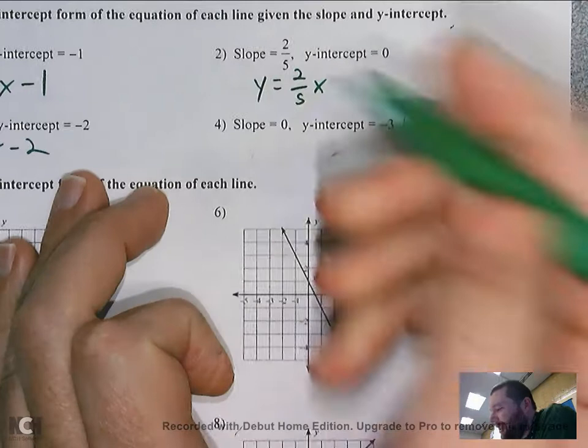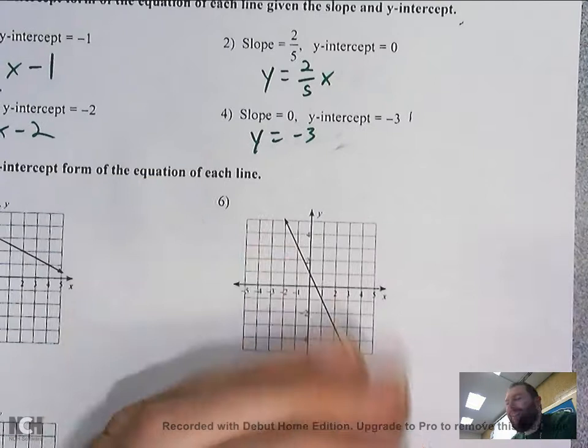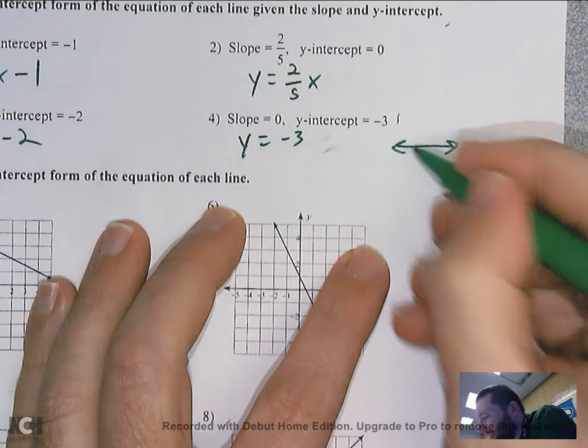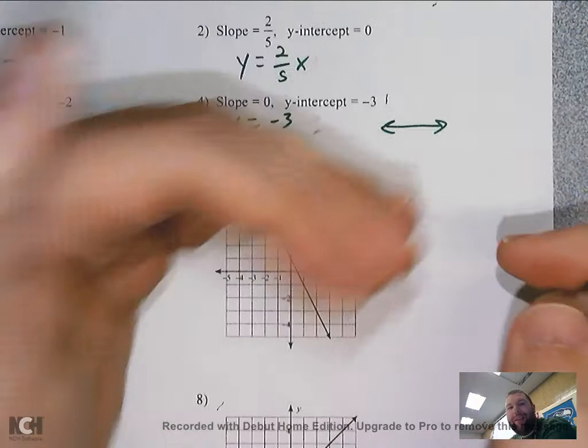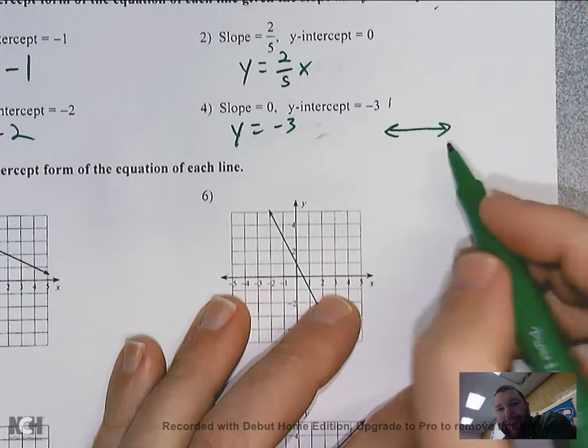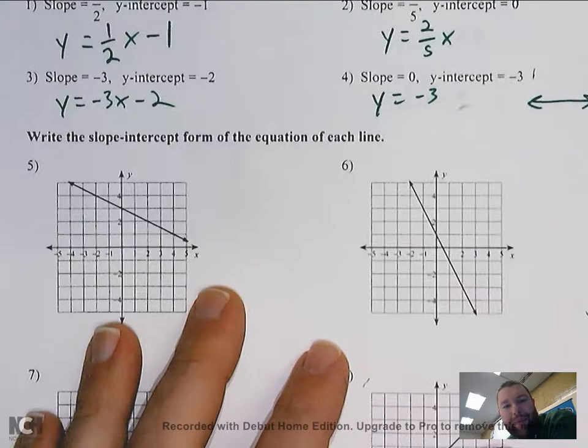It represents the horizontal line — the line that goes left to right. Remember: y equals a number is a horizontal line; x equals a number is the vertical line. y equals only intercepts the y-axis; x equals only intercepts the x-axis.